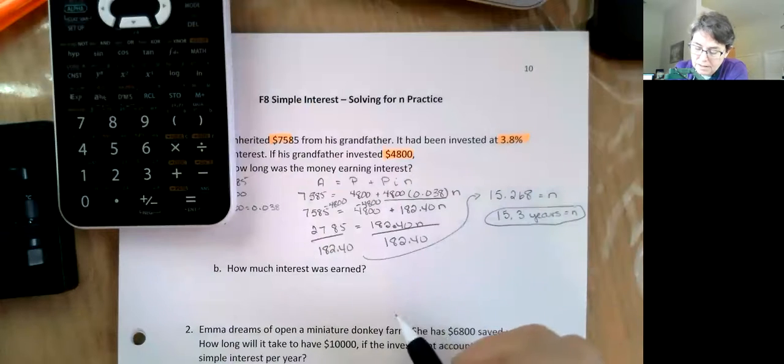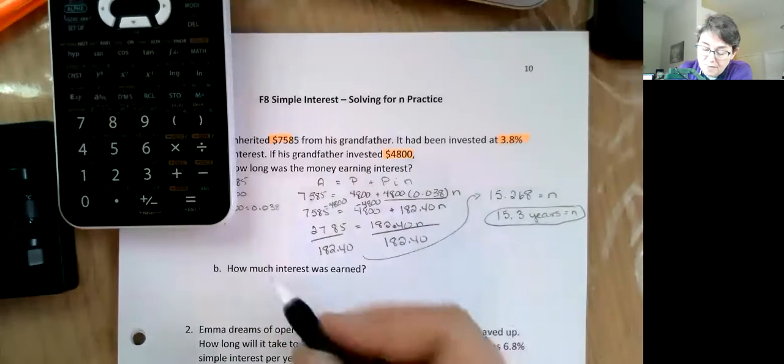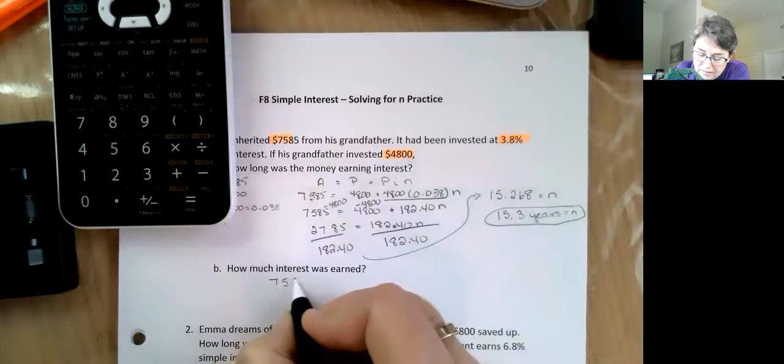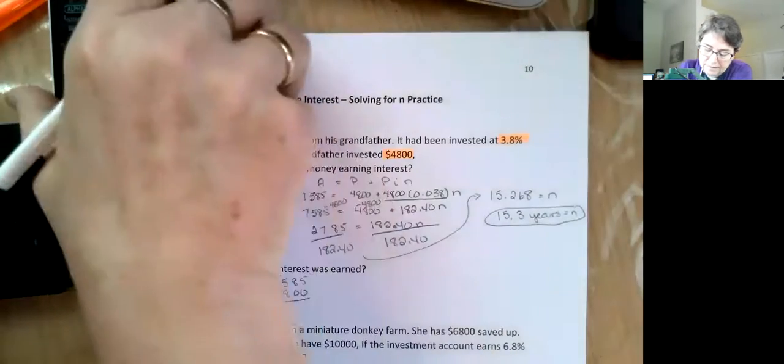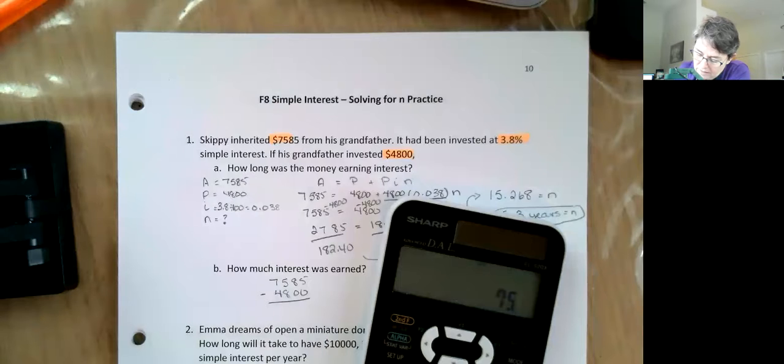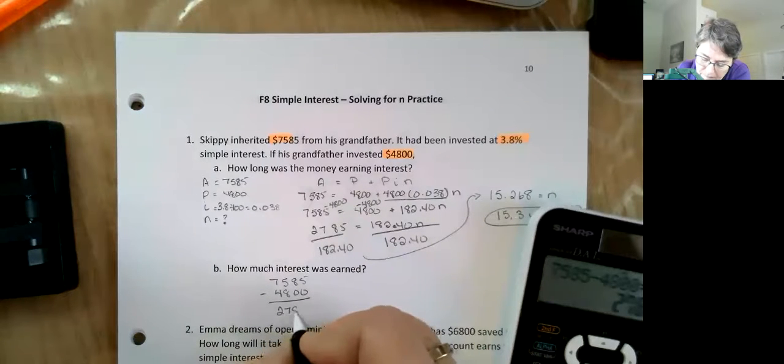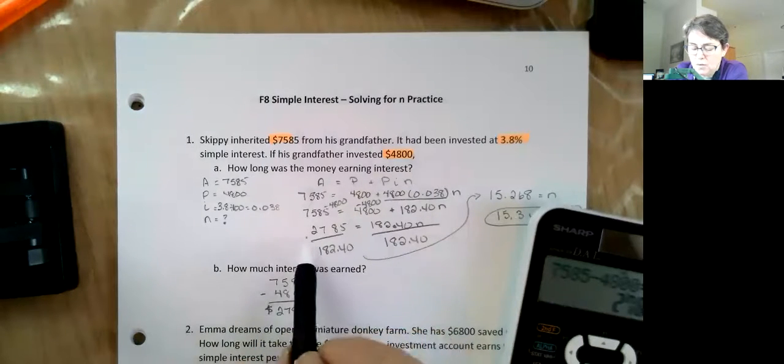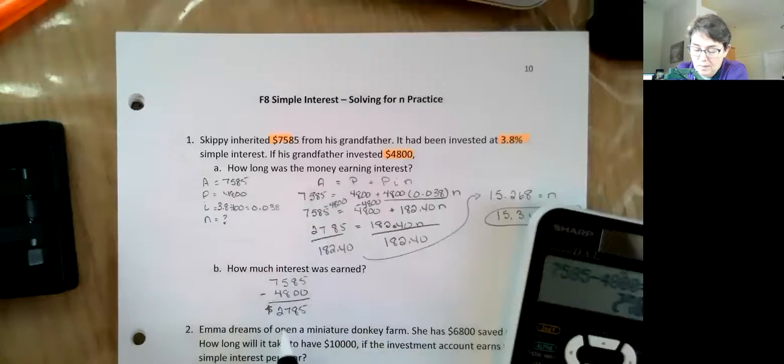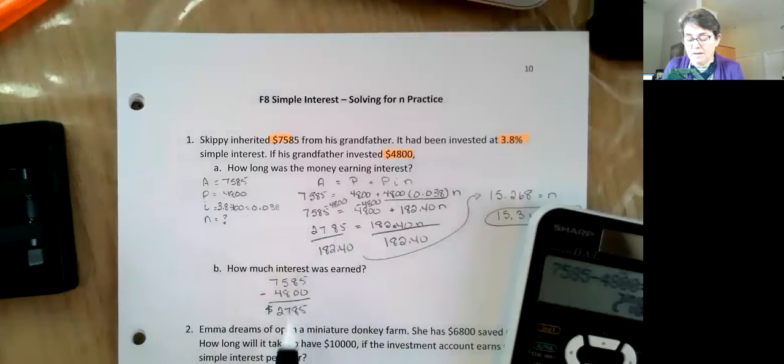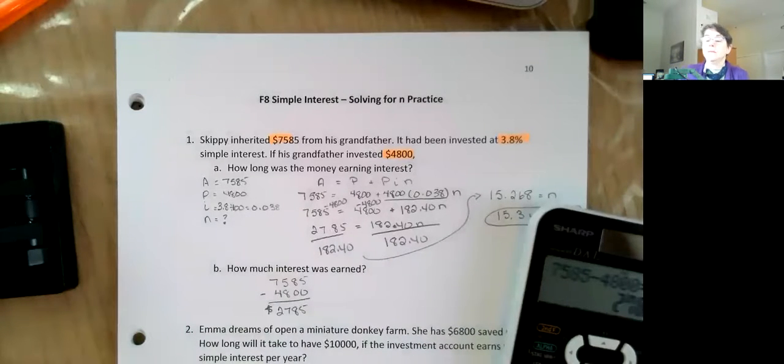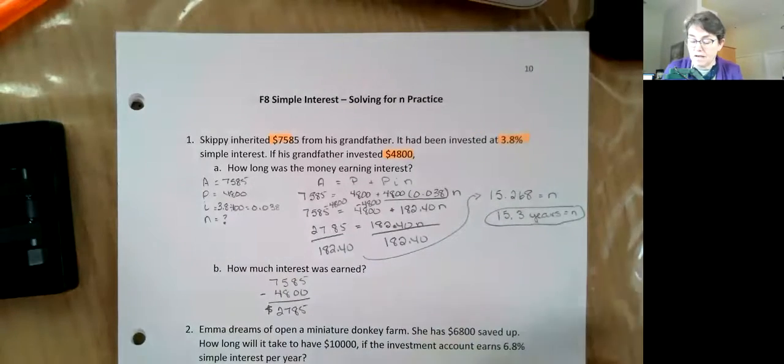Now, how much interest was earned? Well, even if you can't do the rest of the question, you could do that because at the end there was $7,585 and at the beginning there was $4,800, and the difference between that is $2,785. I know that answer was right there, but I would rather redo my question for the extra few seconds that it took and make sure these match, than just grab that answer and use it there and then find out that I screwed up and I'm compounding my problem.